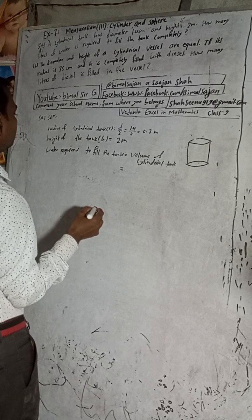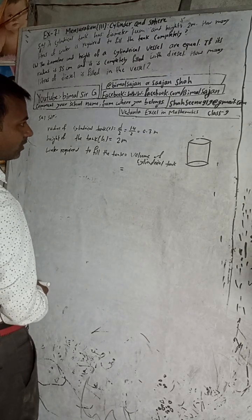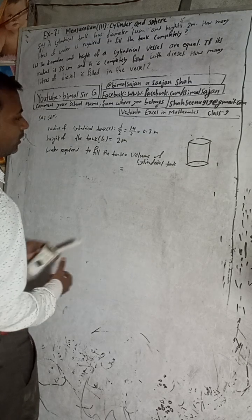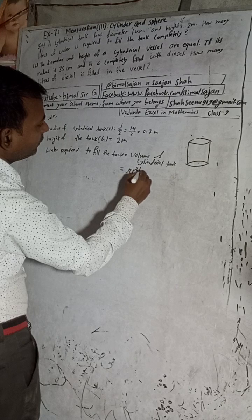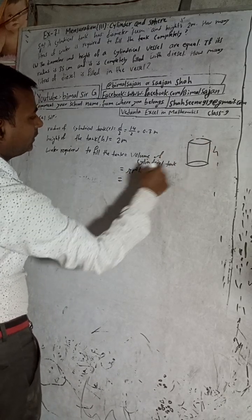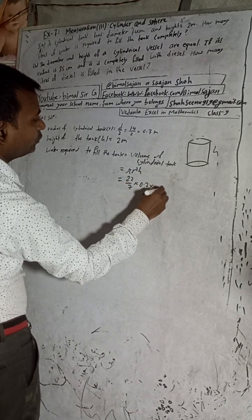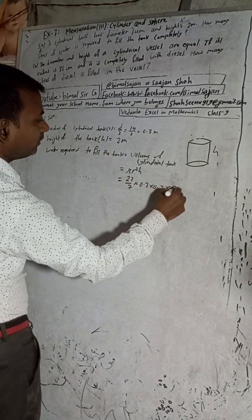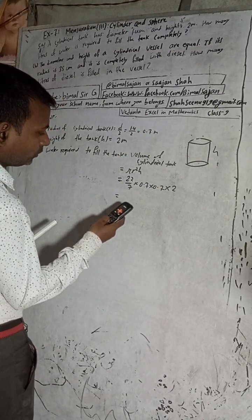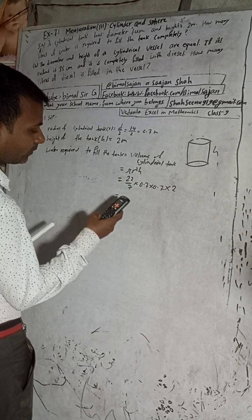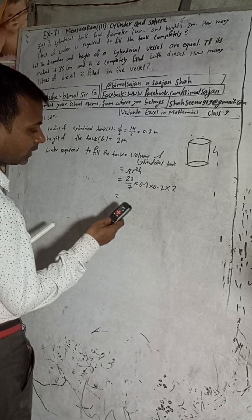Volume of the cylindrical tank, the formula here is cross section area or base area, πr² into h. This is 22/7 into 0.7 into 0.7 into 2, which equals 3.08 meter cube.